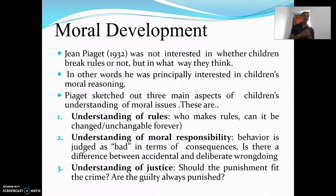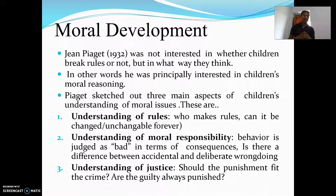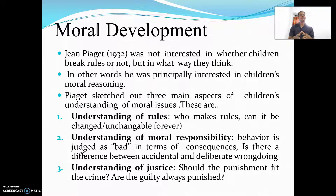The first aspect is how children understand rules — who makes the rules, can they be changed, and are they forever? The second aspect is how children understand moral responsibility — that means behavior is judged in terms of bad or good in terms of consequences, and whether there is any difference between accidental and deliberate wrongdoing. The third aspect is children's understanding of justice — should punishment fit the crime, should the guilty always be punished, or should the guilty be forgiven?